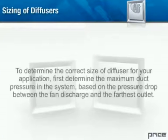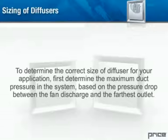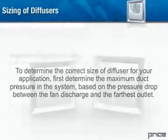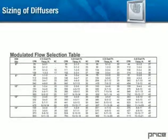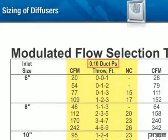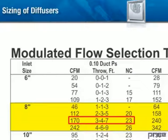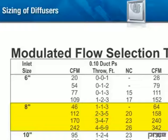Sizing of diffusers: To determine the correct size of diffuser for your application, first determine the maximum duct pressure in the system based on the pressure drop between the fan discharge and the farthest outlet. Using the modulated flow selection table for the appropriate VAV diffuser, find the design duct pressure that best matches the conditions. Select the inlet size that meets the specified sound criteria at the maximum design air volume. Check the throw values under these conditions to ensure they match the space requirements. Refer to the air distribution guide in the Price Air Distribution Products catalog for more information on throw selection. Upon selection of the appropriate diffuser size, note the lowest air volume cataloged under the duct pressure column. This is the minimum limit of the diffuser at the listed static pressure. Assure that throw, noise, and air volume meet the required specifications.